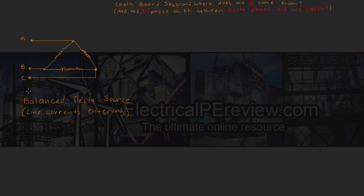Over here on our left, we've got our balanced delta source, which means our line currents are going to be entering our three windings here. So let's map it out. We know this is going to be our line current Ia entering the delta, our line current Ib entering the delta, and our line current Ic also entering the delta.